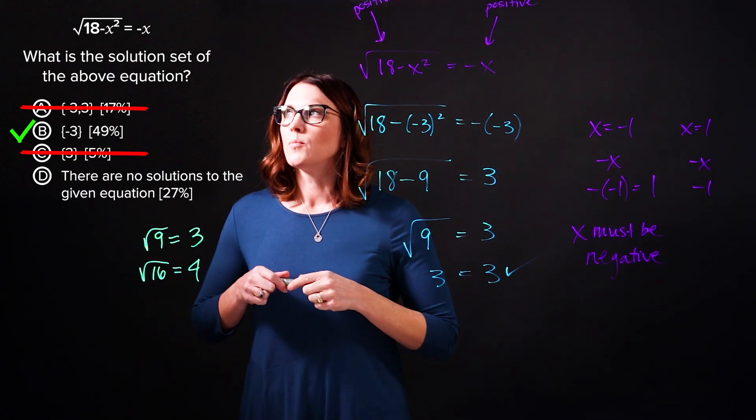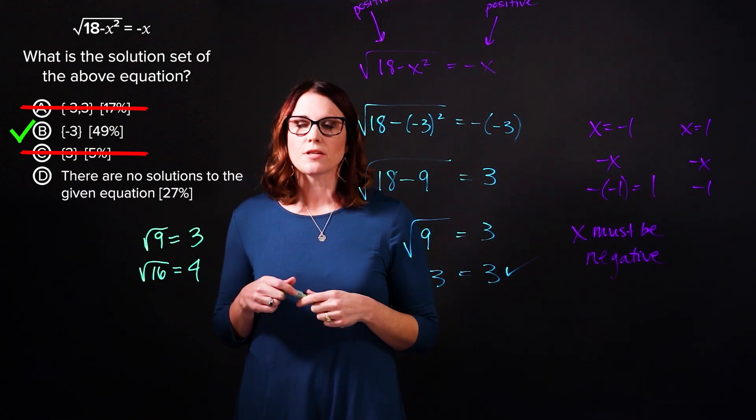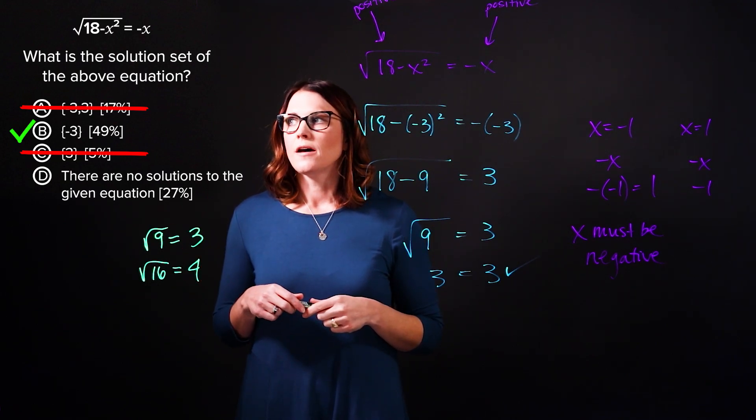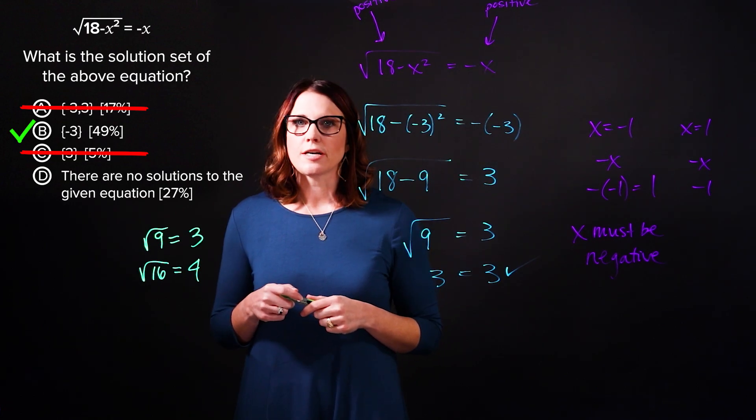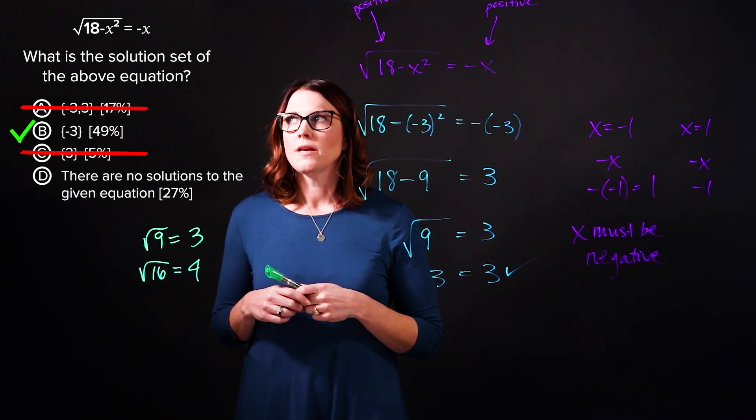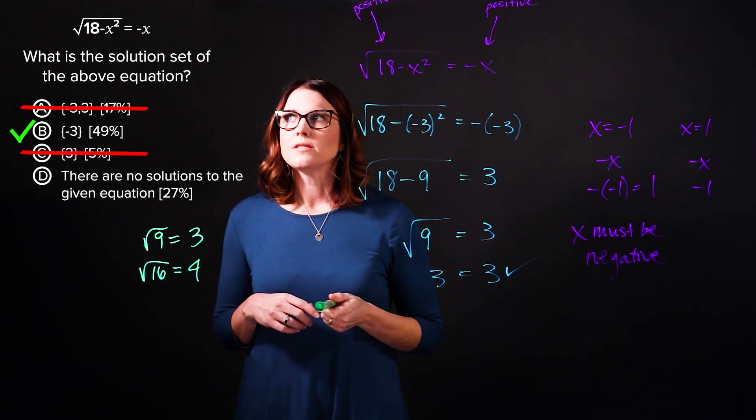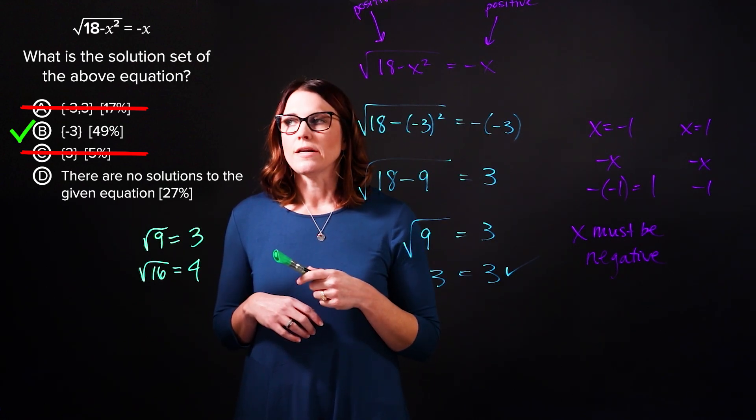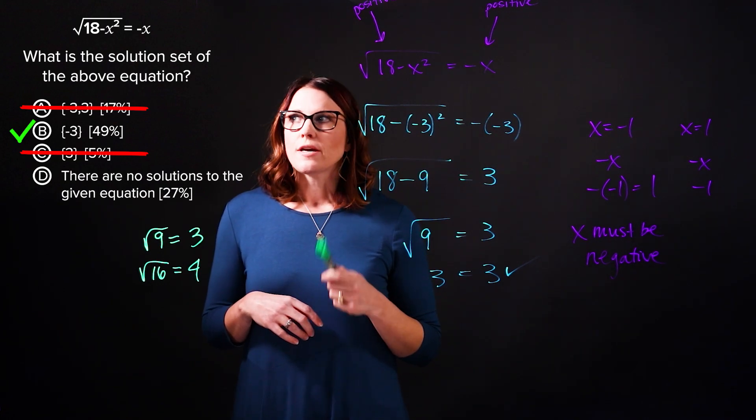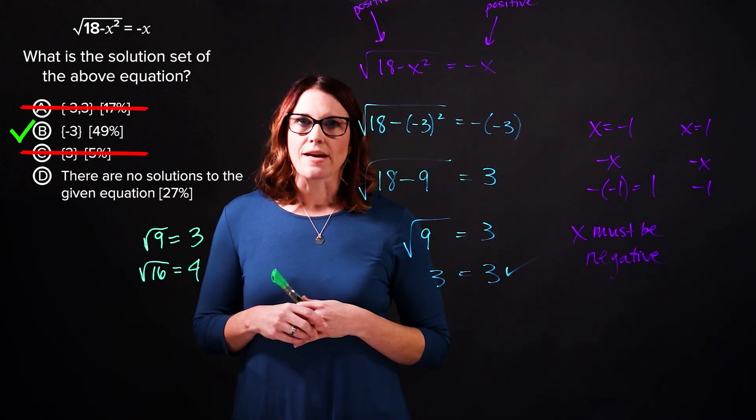Now, if this problem were given a little bit differently, if you did not have answer choices to choose from, then you would have to go through the steps of solving the radical equation, and then you would need to plug your solutions back into the original equation to check if they're valid or extraneous. To learn more about that, you can practice with our UWorld question banks.